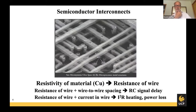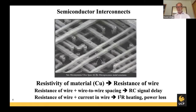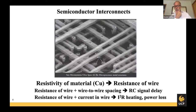The material property of interest here is the resistivity of the copper, because that determines the resistance of the wire. These wires are adjacent to other wires, so when I try to push a current through a wire, these other wires serve as ground planes and I get capacitance. That gives me an RC signal delay, so the resistance of wires is crucial to that.